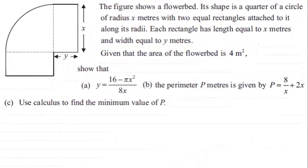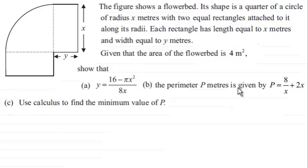Hi. In this next part of the question we're asked to use calculus to find the minimum value of p. Remember in the previous part of the question we showed that the perimeter p metres of the flower bed was given by p equals 8 over x plus 2x.